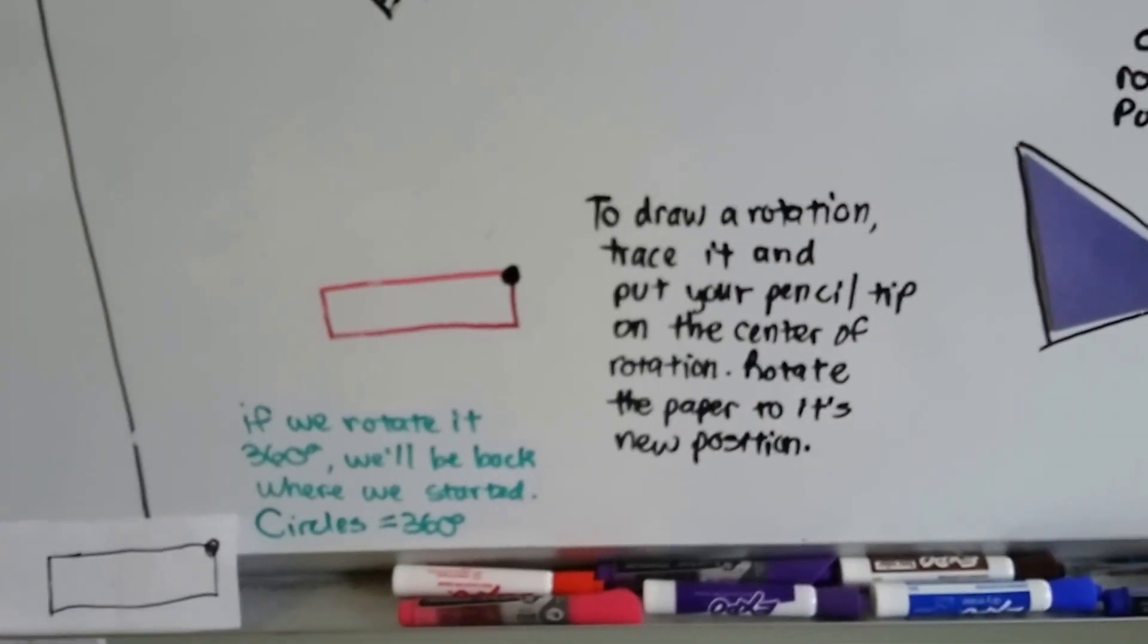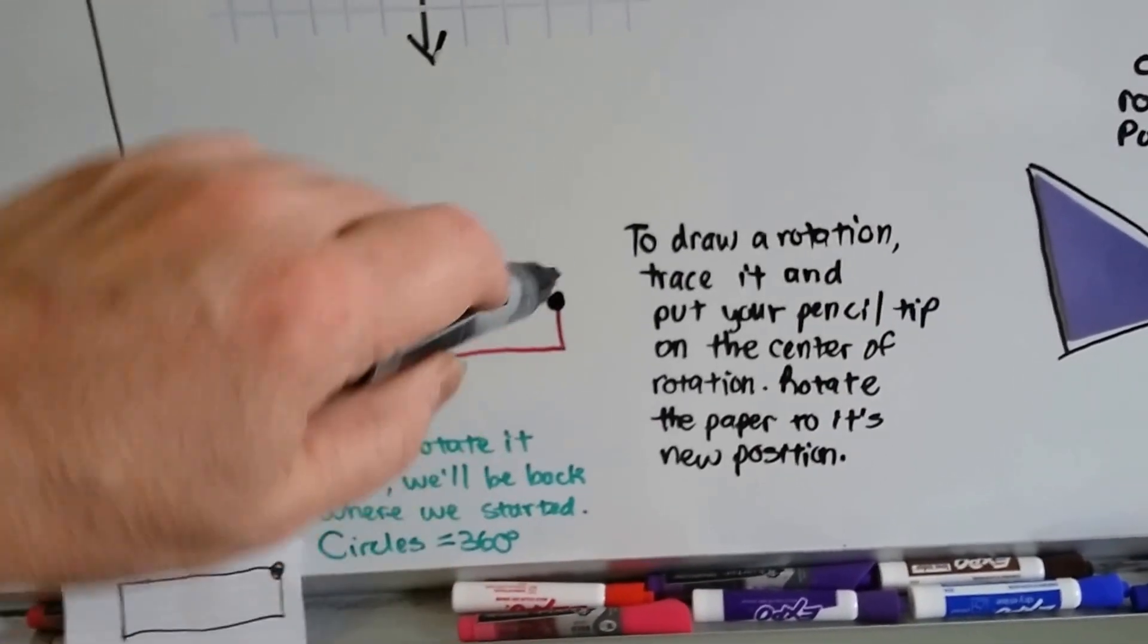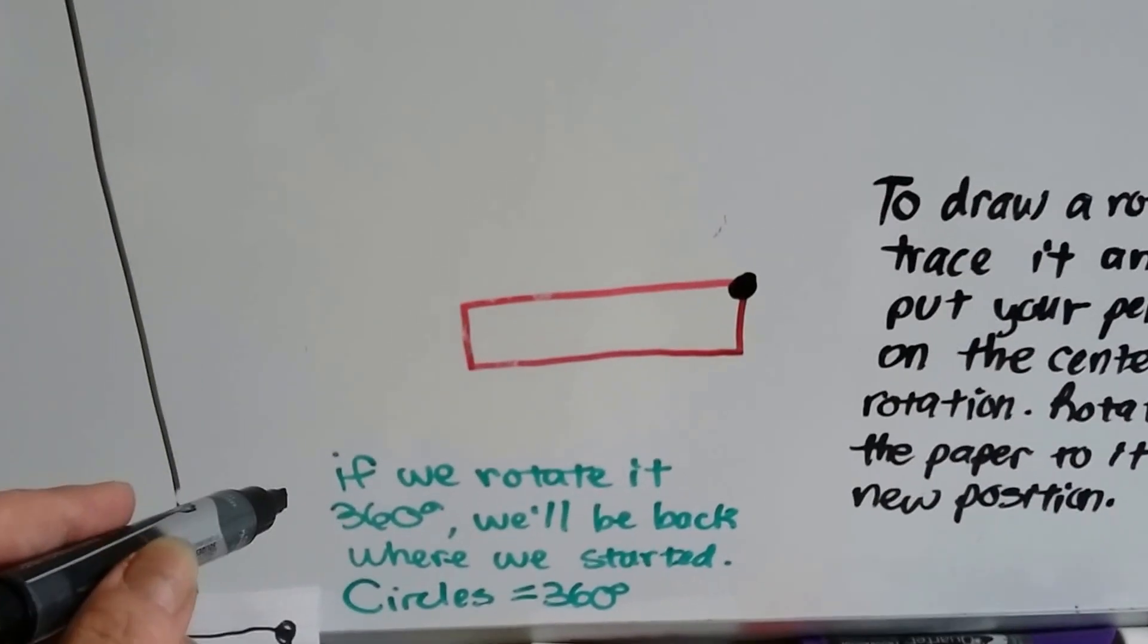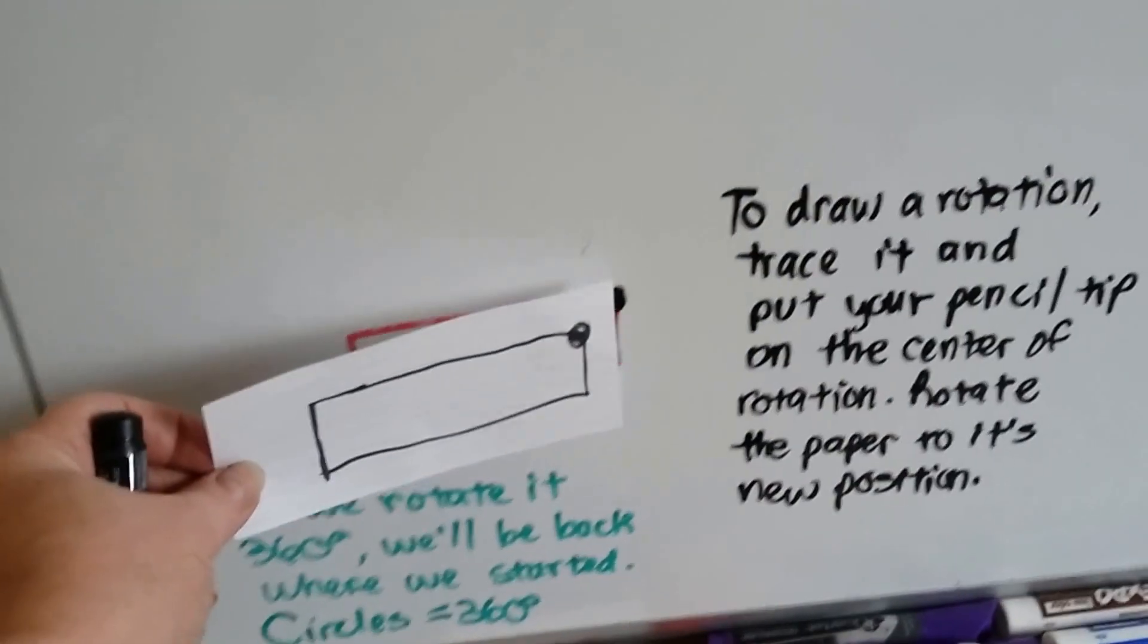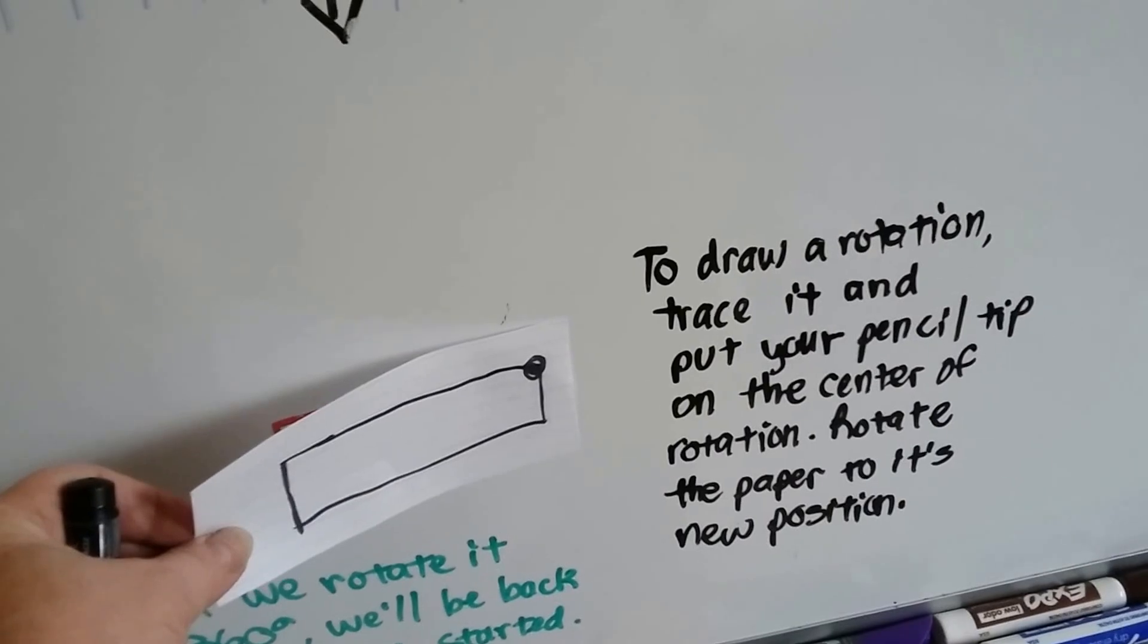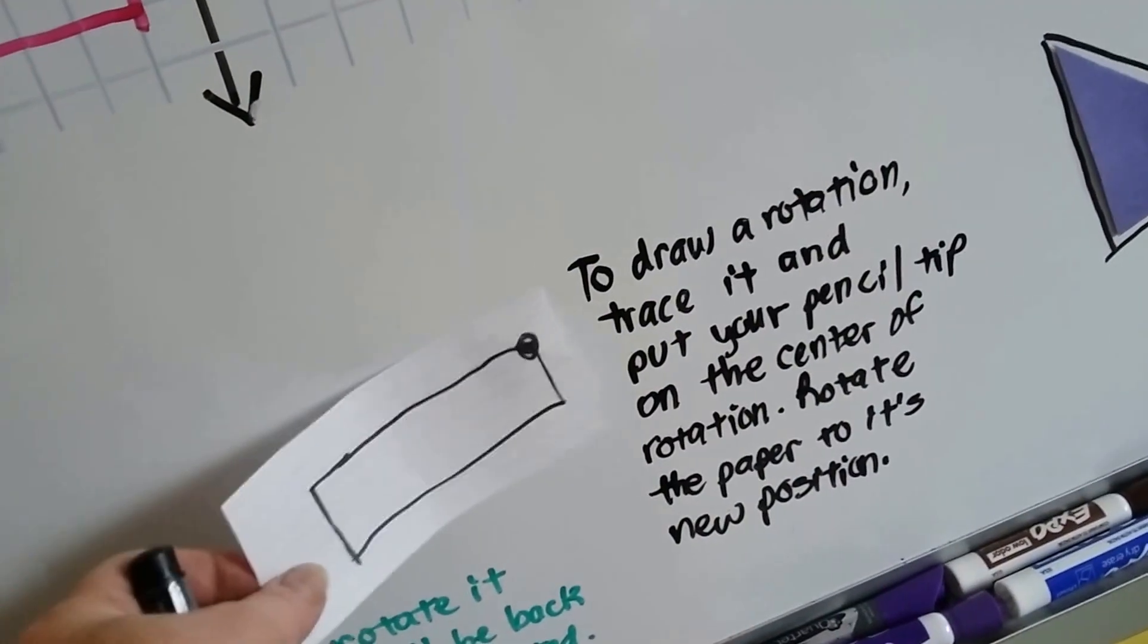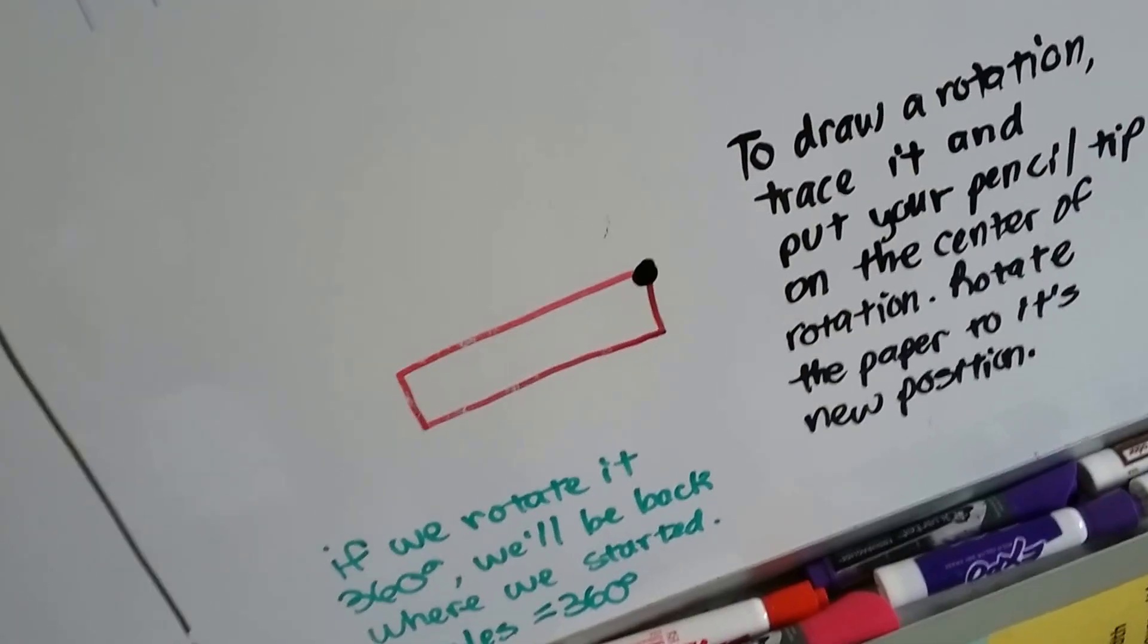You can also draw a rotation and trace it, and put your pencil on the tip of the rotation, and then rotate the paper around to its new position. If we rotate it 360 degrees, we're going to be back where we started from, because circles are 360 degrees. So if we traced this one, and then put our pencil on that black dot, our center of rotation, and we moved it around, we'd be able to see it rotating. And if we went completely around 360 degrees, we'd be right back on top of our shape.